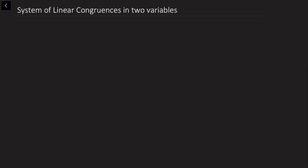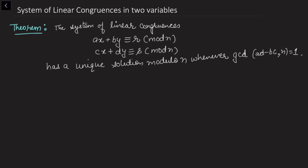In this video we want to discuss the solutions of the system of linear congruences in two variables. The result says the system of linear congruences in two variables — where we have considered x and y as two variables and two congruences — has a unique solution modulo n whenever gcd(ad - bc, n) = 1.